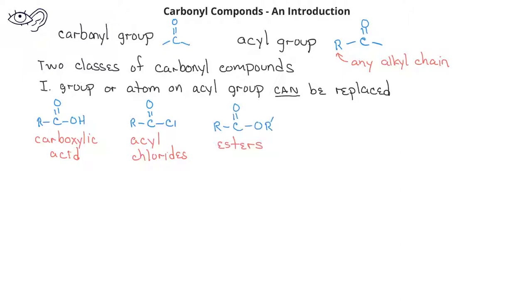Esters are another class I type of carbonyl compound, in which we have an alkoxide group bonded to the carbonyl carbon. It's important to note that in this case, the different alkyl chains R and R' could be different, or they could be the same.